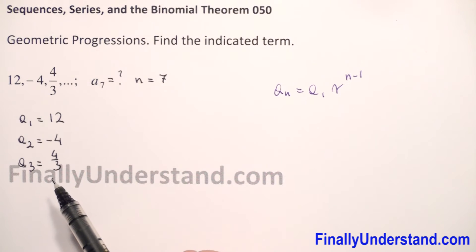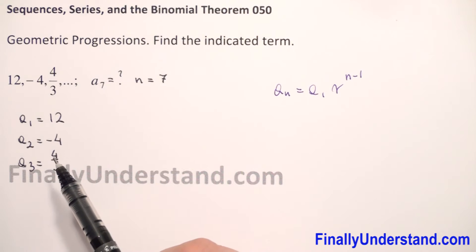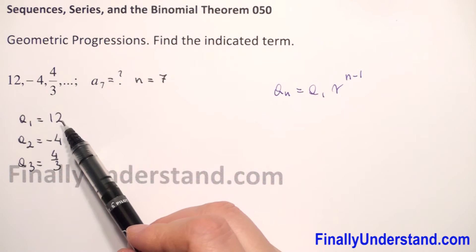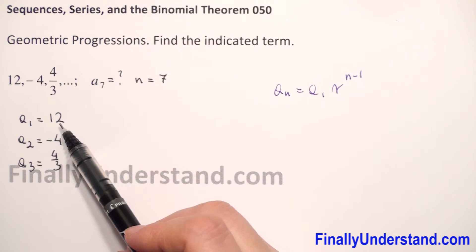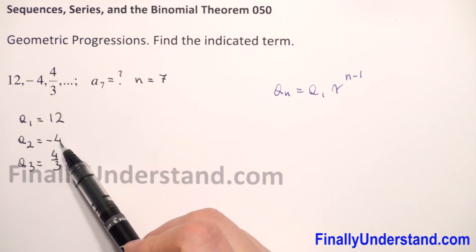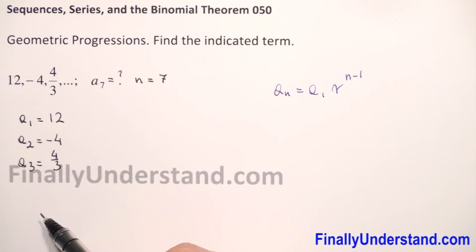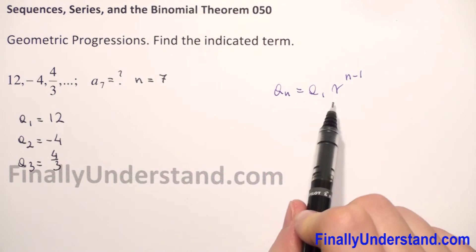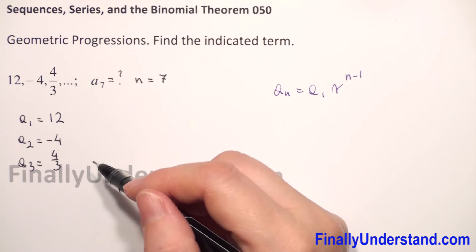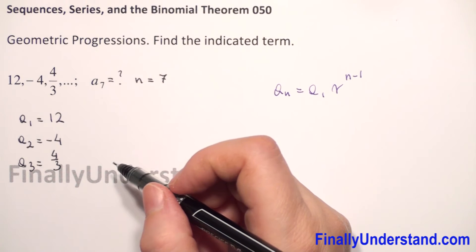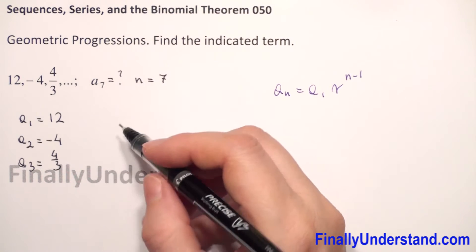Because this is a geometric progression, every term after the first is found by multiplying by the common ratio r to get the second term. We multiply the second term by the common ratio r to get the third, and so on. So to find r, this constant number, we take two consecutive terms and divide the second one by the first one.